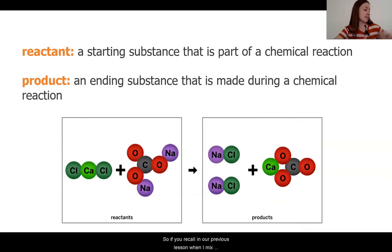So, if you recall in our previous lesson, when I mixed the solutions of calcium chloride and sodium carbonate together, it really seemed like they made something new. We went from having these two substances that were colorless, kind of cloudy liquids, to this milky white liquid with some powder in the bottom. If this is a chemical reaction, then we would say that our reactants were the calcium chloride and the sodium carbonate solutions, and our products would be that milky white substance that we made.